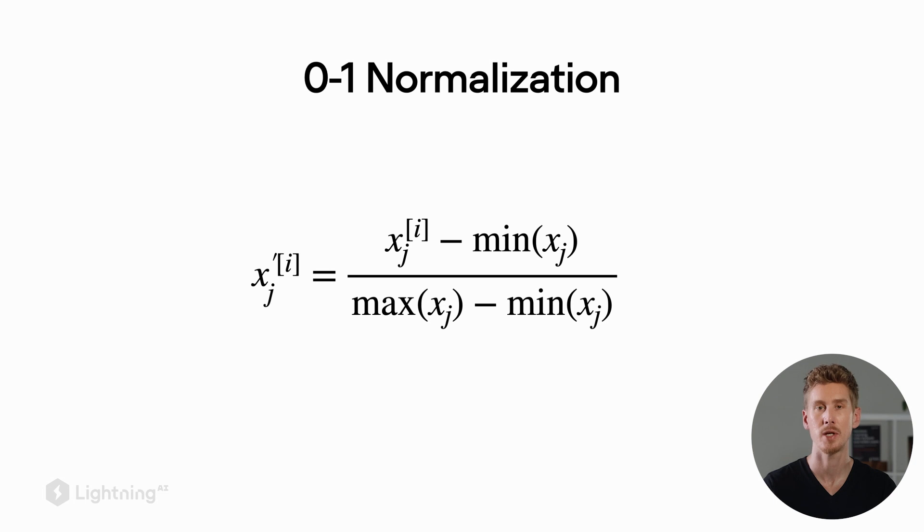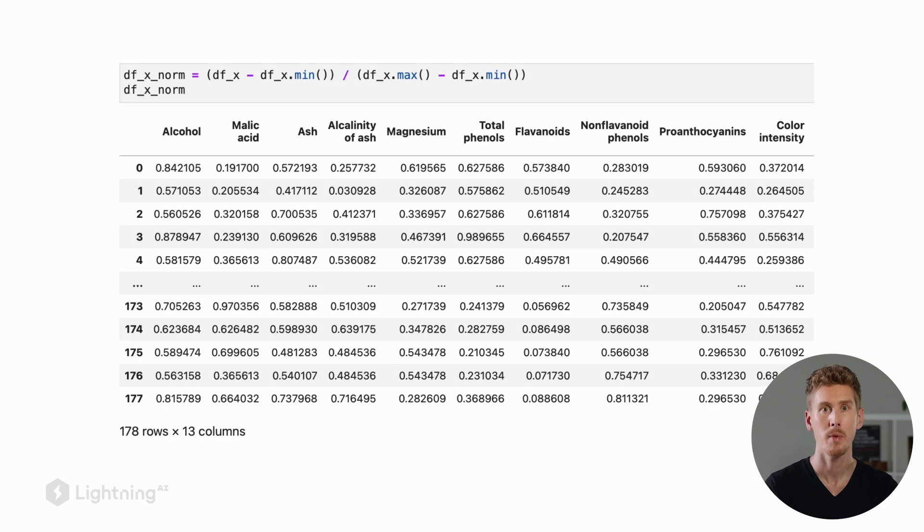As the name zero-one normalization implies, the feature minimum will be at zero and the feature maximum will be at one after the normalization.